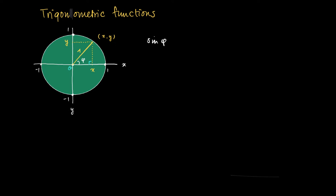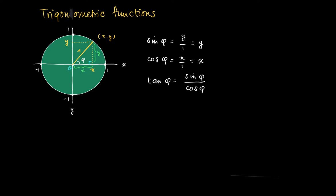We have a right angle triangle and the sine of this angle phi is defined by the y-coordinate divided by the length of the hypotenuse. The cosine of phi is defined by x divided by 1, so the length of this side divided by the length of the hypotenuse, which equals x. The tangent of phi is defined as the sine of phi divided by the cosine of phi, which equals y divided by x.